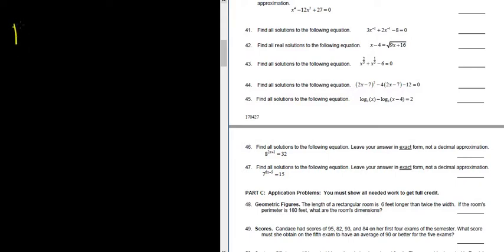Let's work out problem number 43. We have x to the 2/3 plus x to the 1/3 minus 6 equals 0. We should be able to factor this.